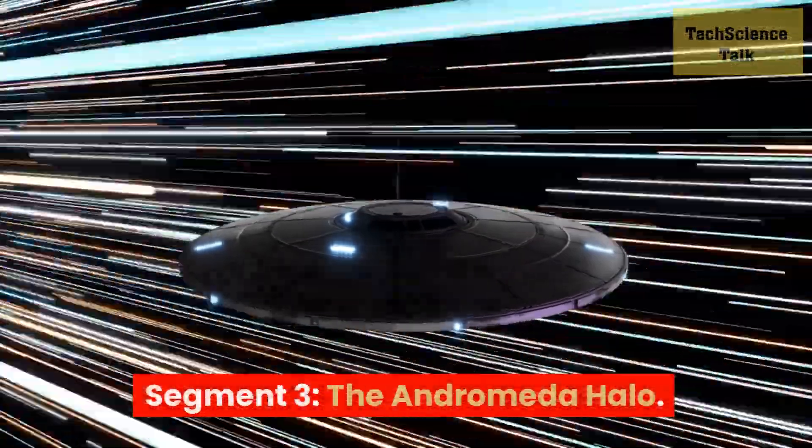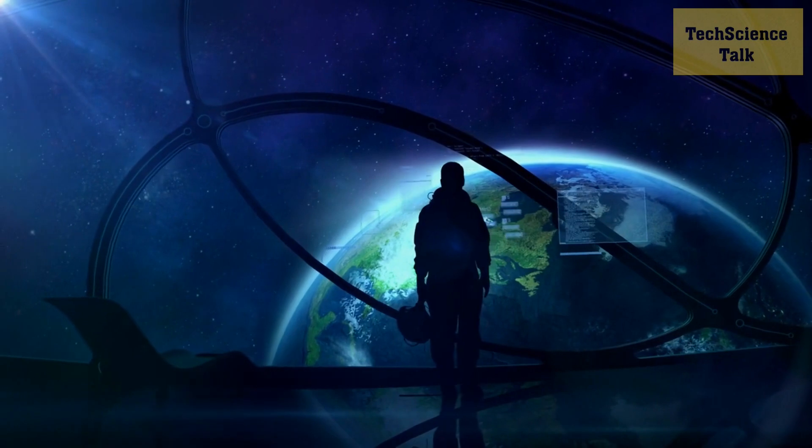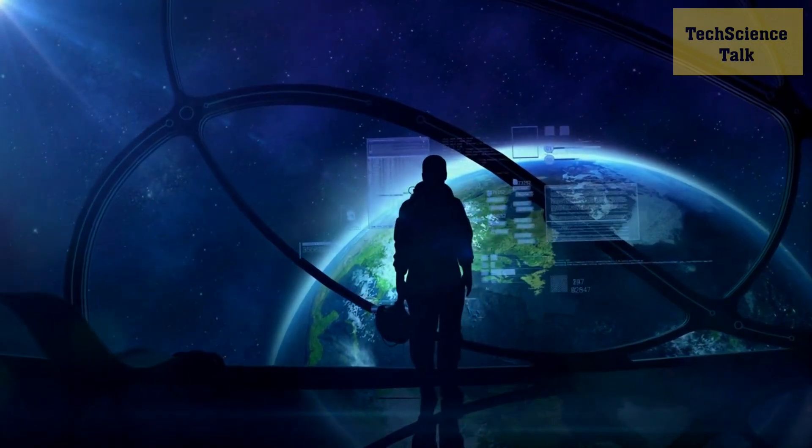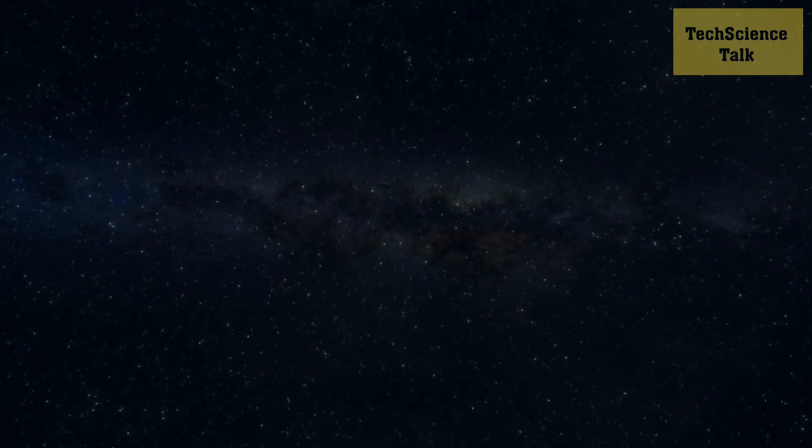Segment 3: The Andromeda Halo. Beyond the visible spiral arms lies an intriguing feature of the Andromeda Galaxy, its halo. Journey into the depths of this faint, extended region that surrounds the galaxy.